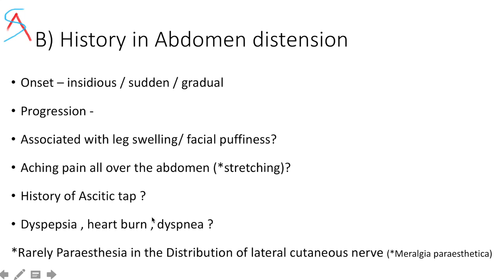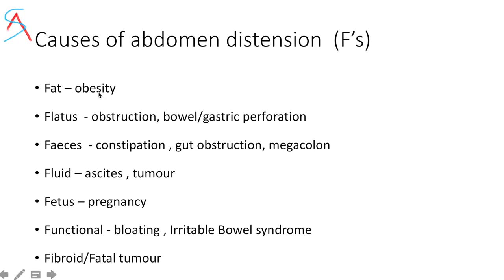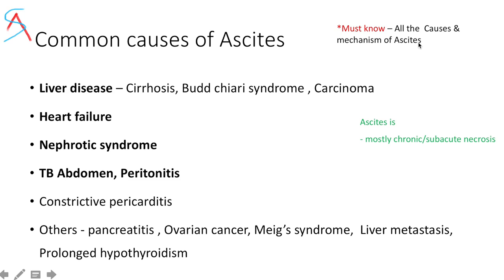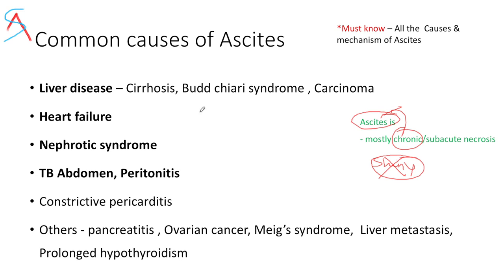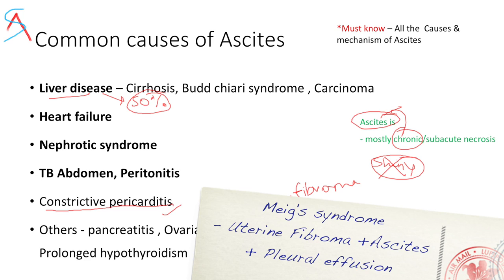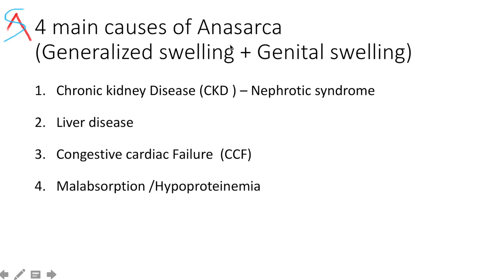The common causes of abdominal distension — remember the F's. You must know all causes of ascites and their mechanisms. The most common causes are liver disease, heart failure, nephrotic syndrome, and TB abdomen. Ascites is mostly chronic — never acute — so the skin won't be shiny or stretched. Ascites in liver disease generally occurs when approximately 50% liver dysfunction is present. Meigs syndrome is a triad of fibroma with ascites and pleural effusion. Anasarca is generalized body swelling including genital swelling, unlike localized ascites. The four most common causes of anasarca are nephrotic syndrome, liver disease, congestive cardiac failure, and malabsorption or hypoproteinemia.